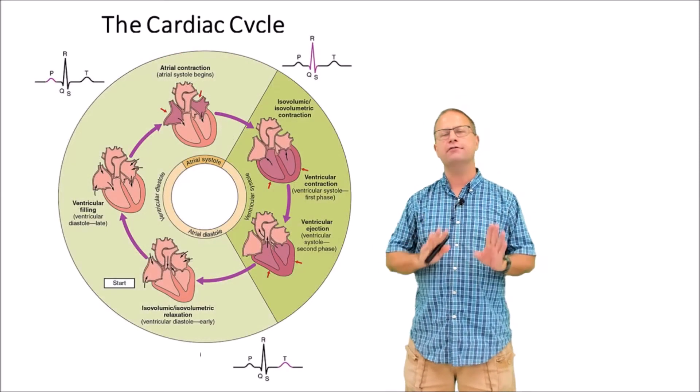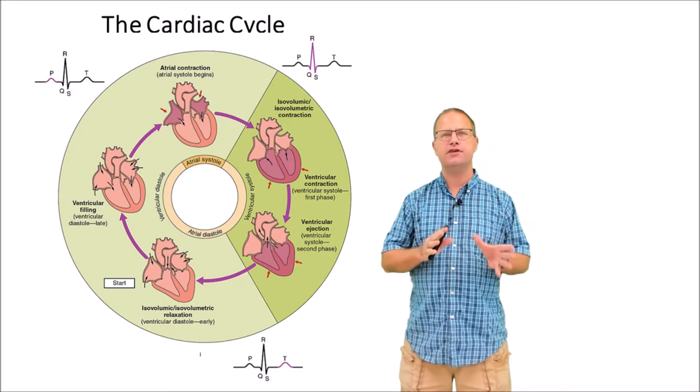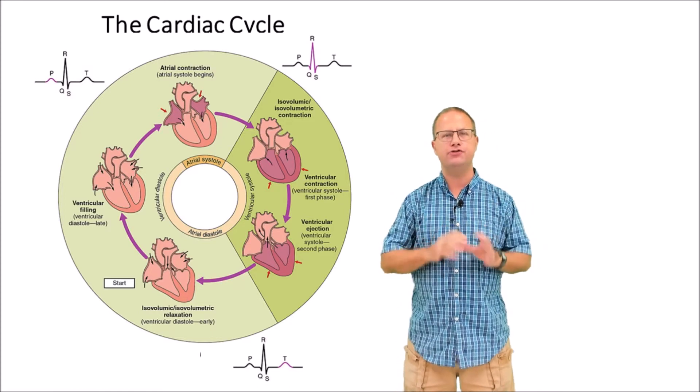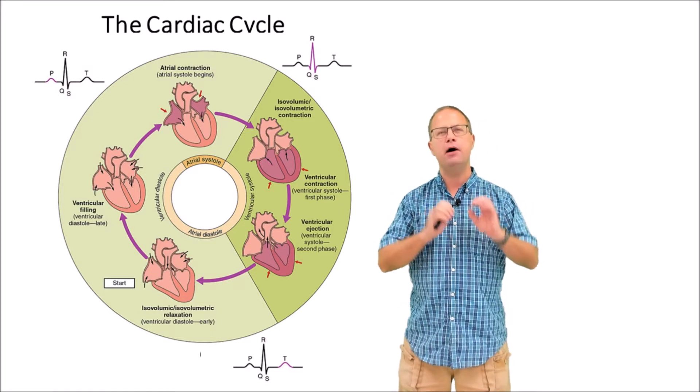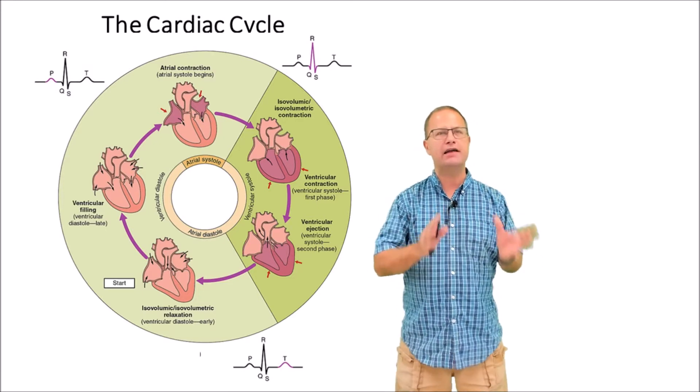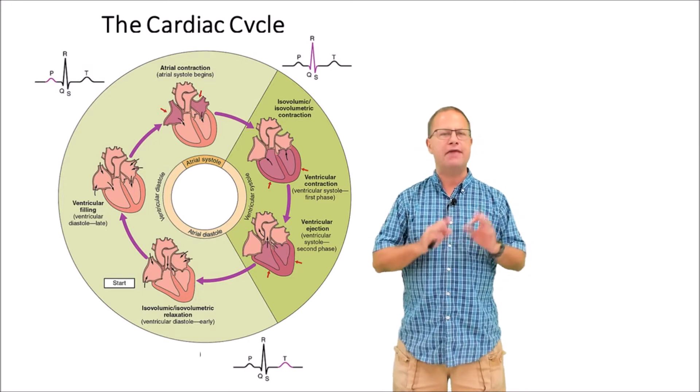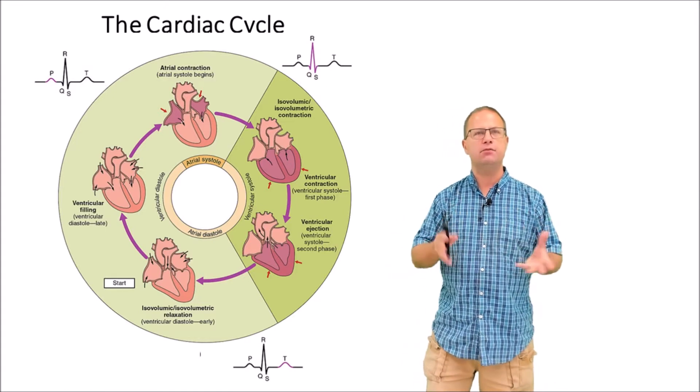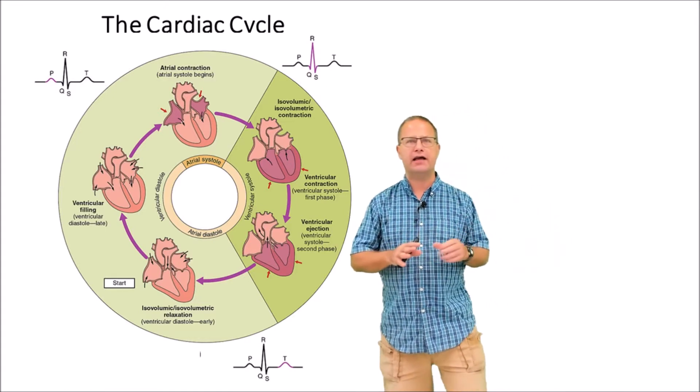Let's talk first about the cardiac cycle. Remember the heart is a four-chambered pump. We have two atria and two ventricles, and the ventricles do most of the pumping. The right ventricle pumps to the pulmonary circuit and the left ventricle pumps to the systemic circuit. Let's see what's going on in the ventricles during the cardiac cycle.